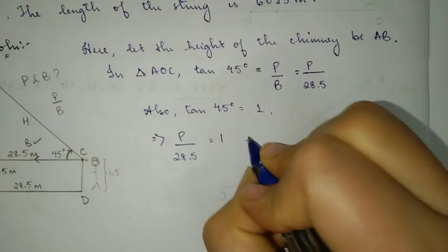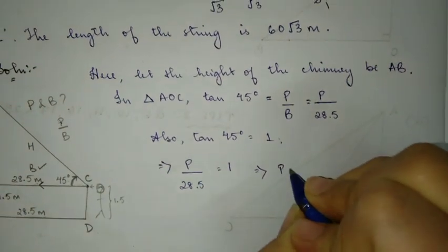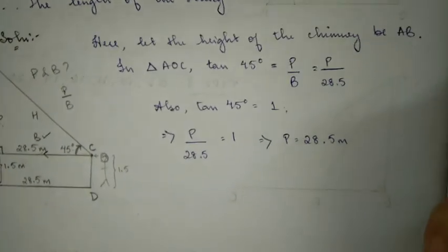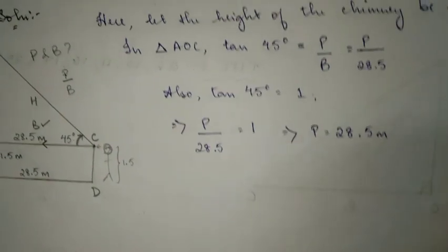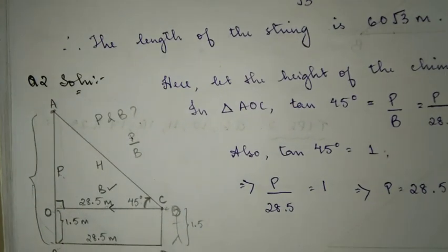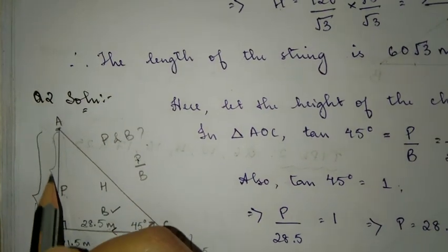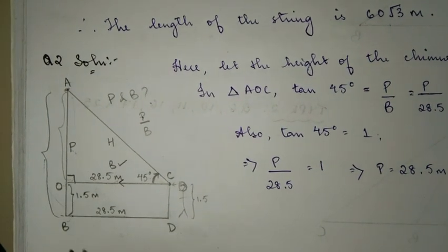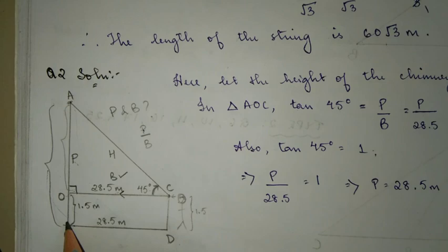If we cross multiply, 28.5 into one will give you 28.5. Now they are asking us to find the total height of the tower - the total height of the tower is AO plus OB, so we're going to write that down.